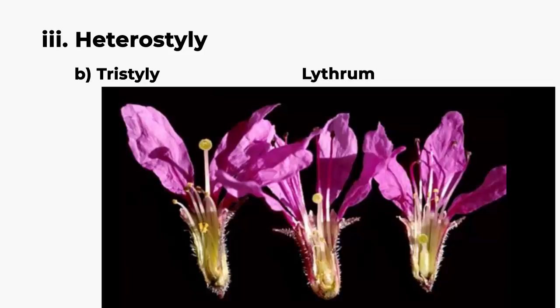The next one is tristyli. Example: Lythrum. Here the plant produces three kinds of flowers with respect to the length of style.